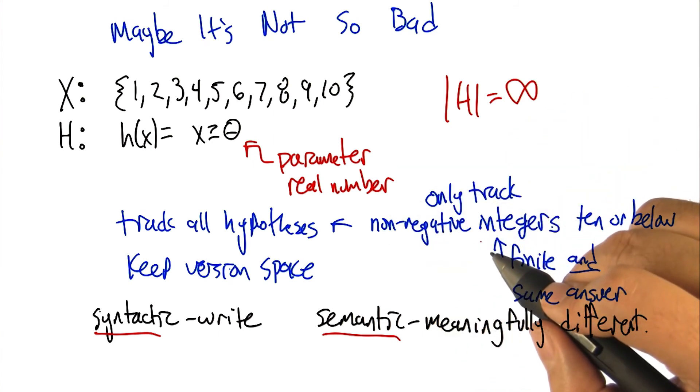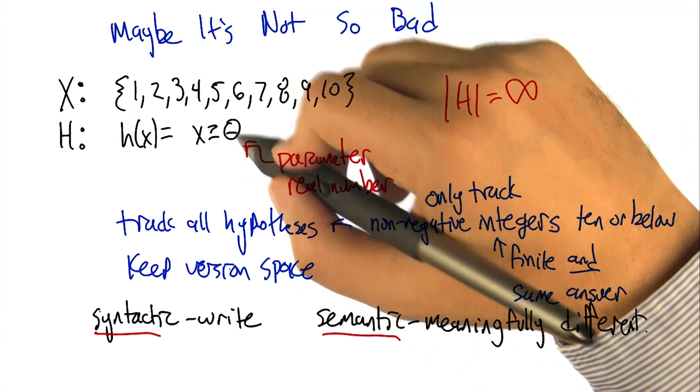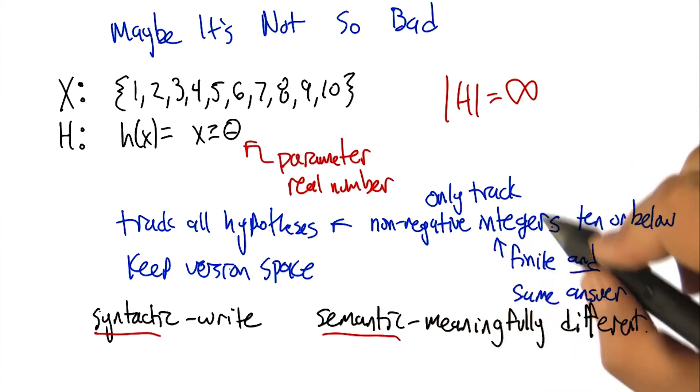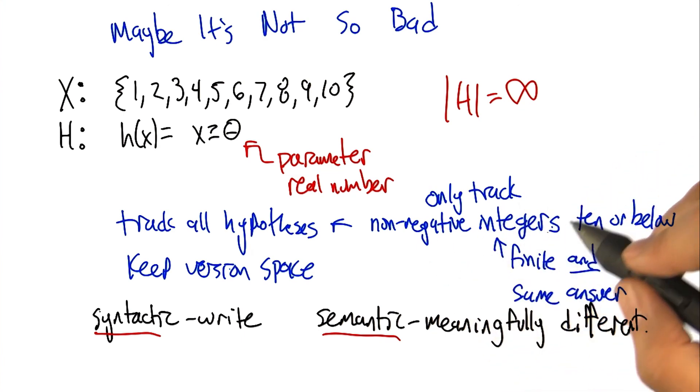So, this is kind of at the heart of what we're going to be able to do, to talk about how we can learn in an infinite hypothesis space, more complicated ones than this example here, but at the same time, without having to track an infinite number of hypotheses, because there's just not that many that are meaningfully different.